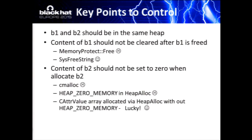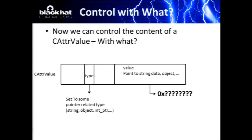Fortunately, our uninitialized memory bug is controllable, because the attribute array is allocated by calling HeapAlloc but without the HEAP_ZERO_MEMORY flag set. So we are lucky, and we can control the data in the CAttribute value — the uninitialized CAttribute value.